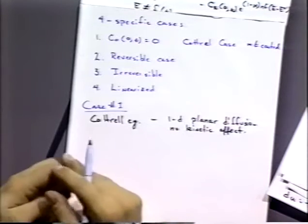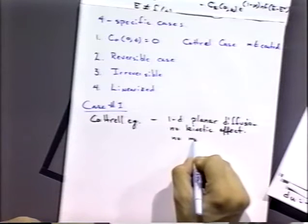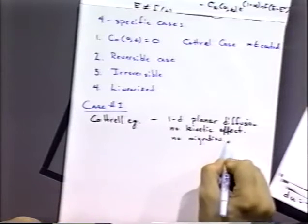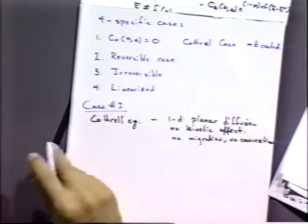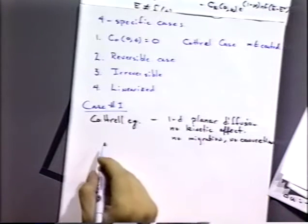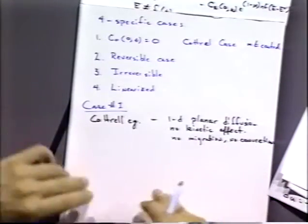The only real effect on current flow will be diffusional flow — no migration, no convection. Planar diffusion refers to the fact that we have an essentially infinitely large electrode, so the only sensible direction in which things can diffuse is toward it or away from it. It can't diffuse sideways on an infinite plane, which makes it a little bit simpler.